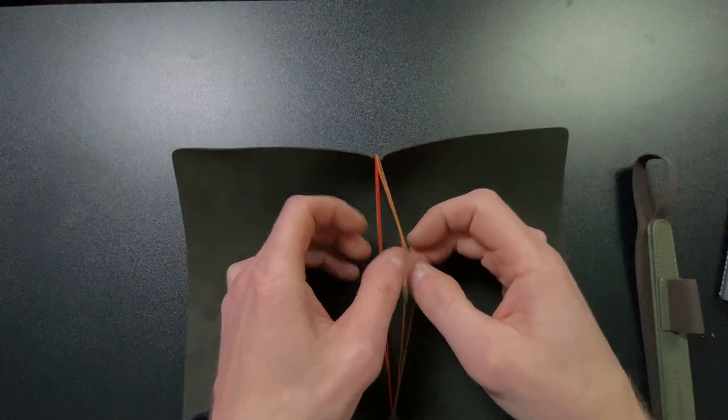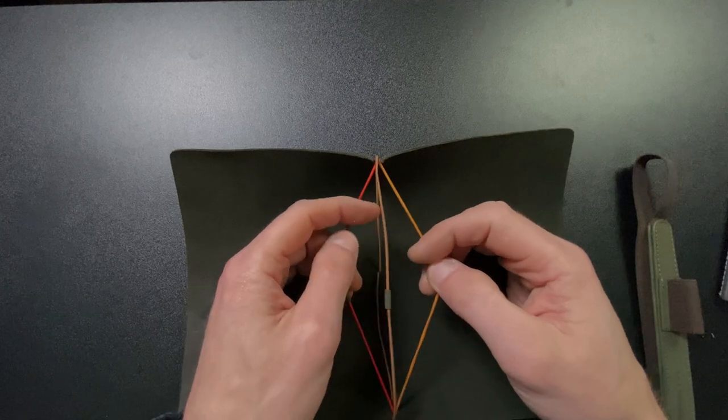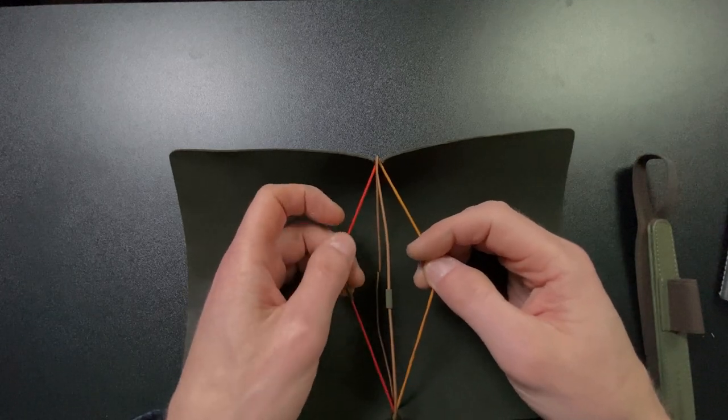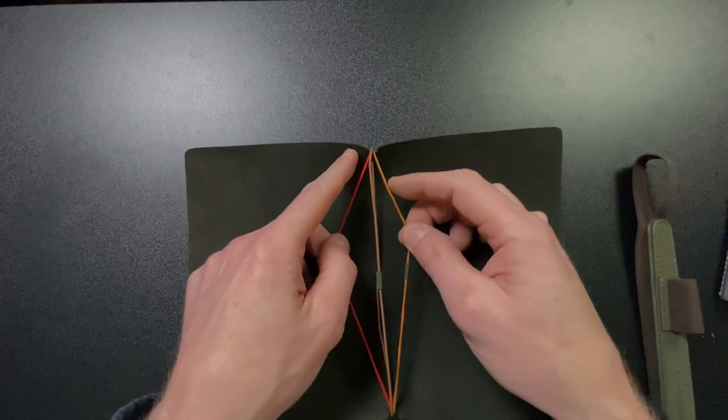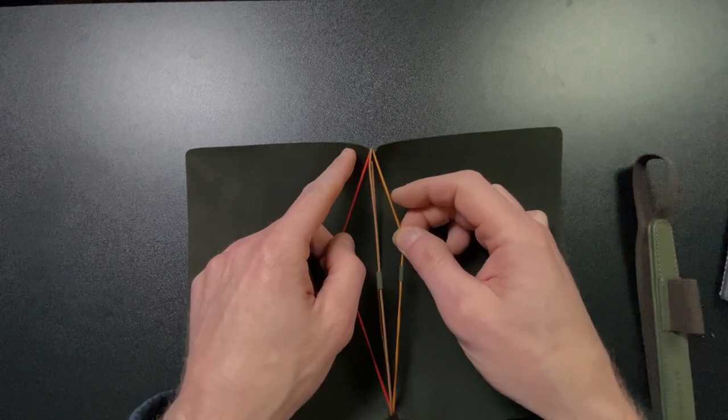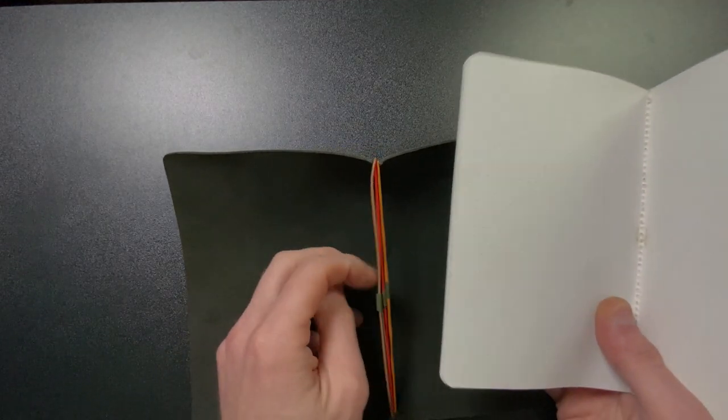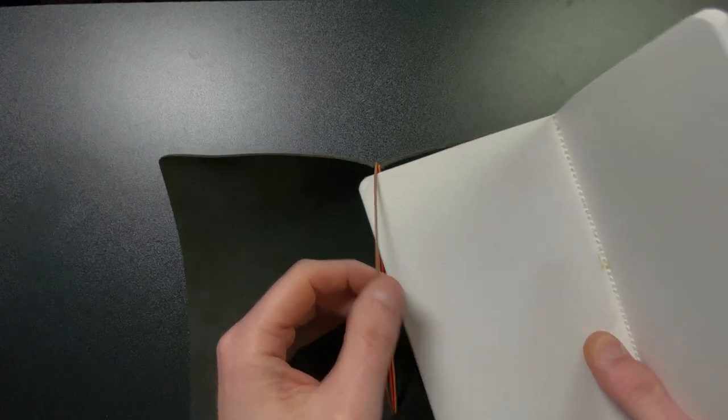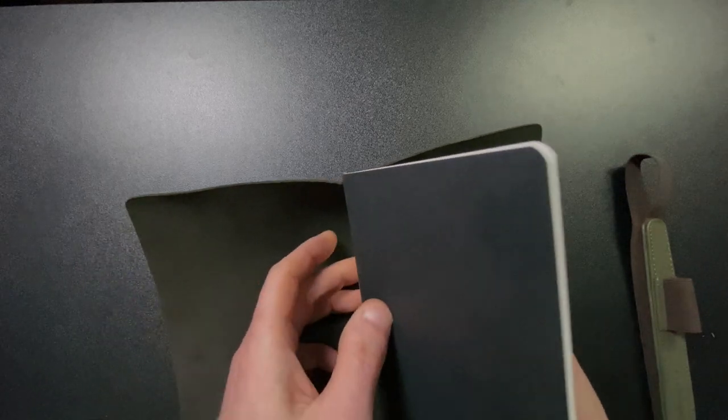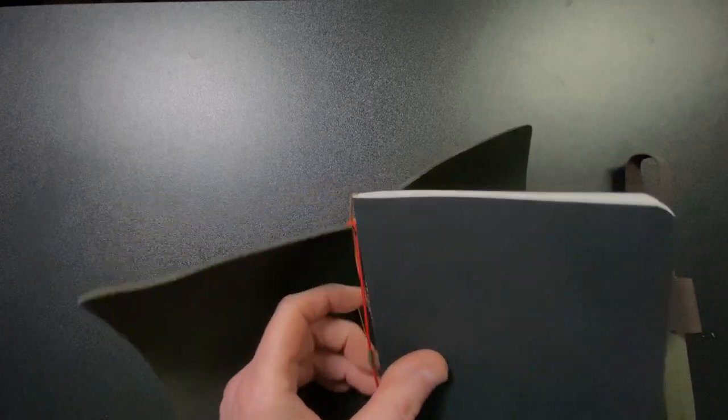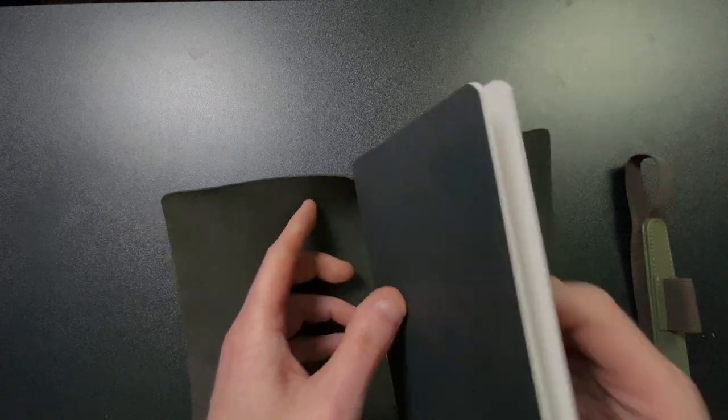I modified my Midori by putting two extra elastics in, so I could have three inserts. And this comes already, well, it's not pre-modded, because this is the way it came from the factory, but it comes with three individual elastics, which I love. I think that is absolutely great that they do that. So you have your central elastic, and then you have your two elastics on either side, and it just works really well.